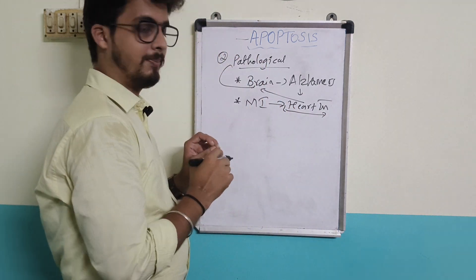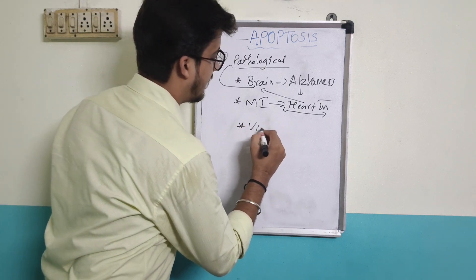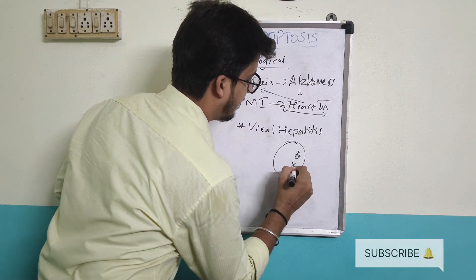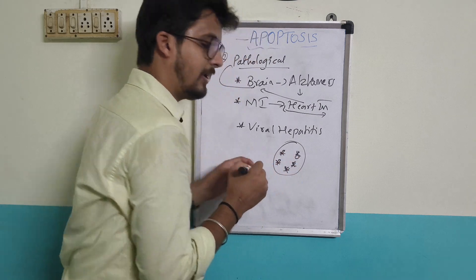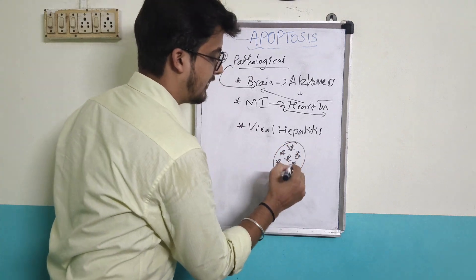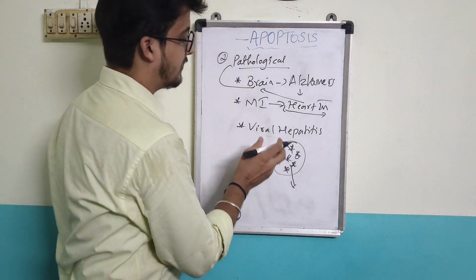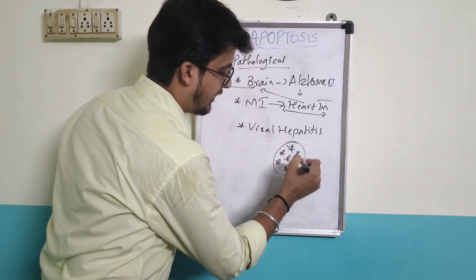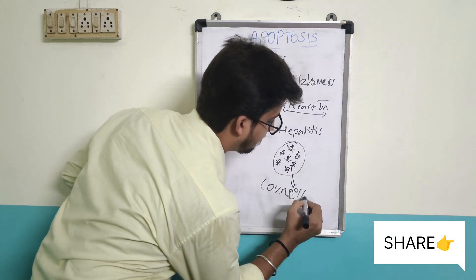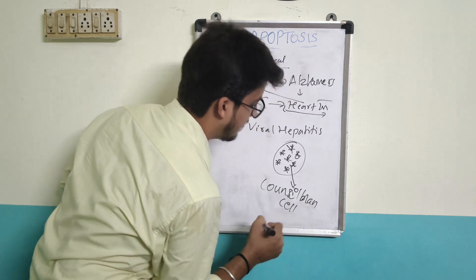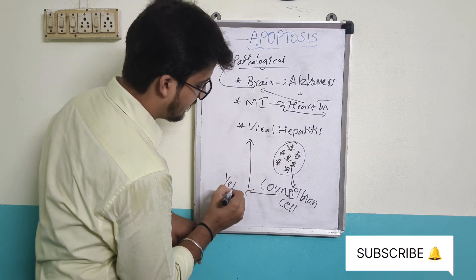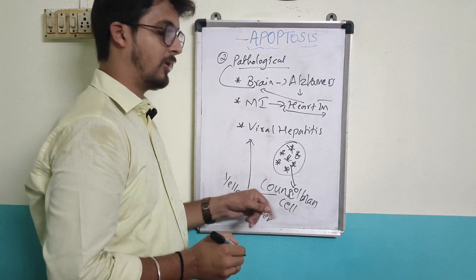The third type of pathological apoptosis is viral hepatitis. In viral hepatitis, a viral infection occurs inside hepatocytes. The viral load increases — the number of viruses increases — and the cells undergo death. The dying hepatocytes are called councilman cells or councilman bodies, which can also be seen in yellow fever.